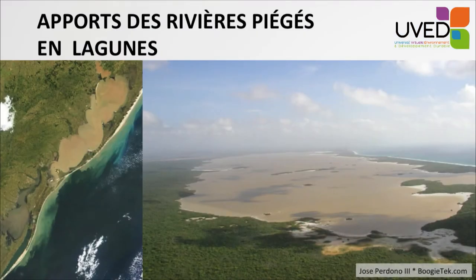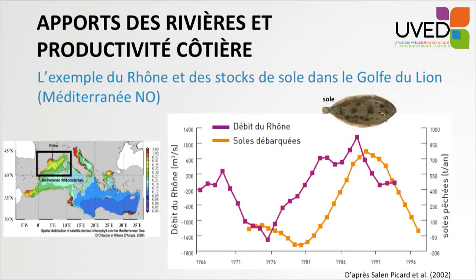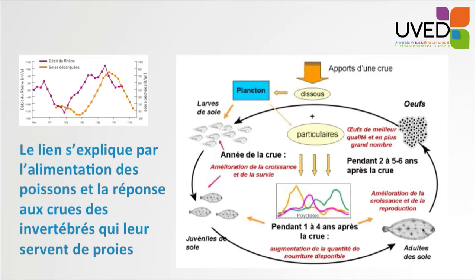Research during the last 20 years has shown that the productivity of coastal ocean areas often depends on organic matter brought by rivers onto the coast. This was shown in Marseilles in the Gulf of Lion, where there was a strong correlation between the number of flat fishes being landed and the flow from the Rhone, the main river constituting the main contribution of organic matter from the continent to the Mediterranean Sea.